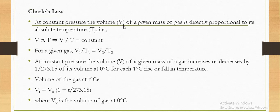Now, Charles's law. It states that at constant pressure, the volume V of a given mass of a gas is directly proportional to its absolute temperature T. In mathematical terms, V is directly proportional to T, which implies V/T equals a constant. For a given gas, V₁/T₁ equals V₂/T₂.